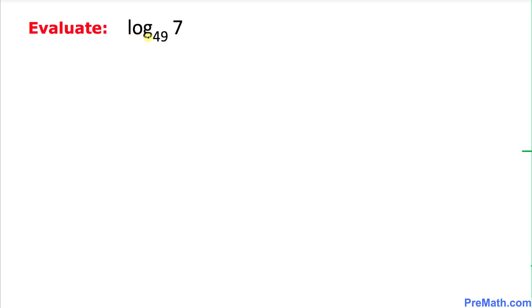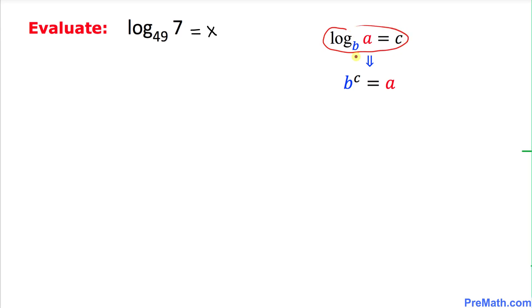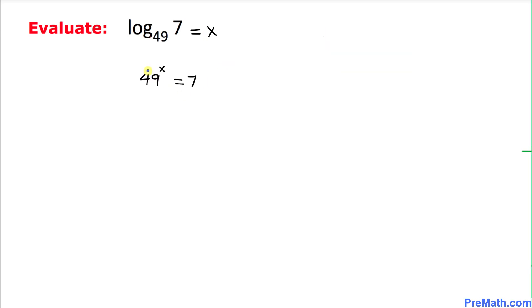Here is our next example: log of 7 with a base of 49. We set this equal to x. This is a logarithmic equation and we want to convert it into an exponential equation. Applying the rule, 49 to the power x equals 7. So we write 49^x = 7. Now, 49 can be written as 7 power 2.